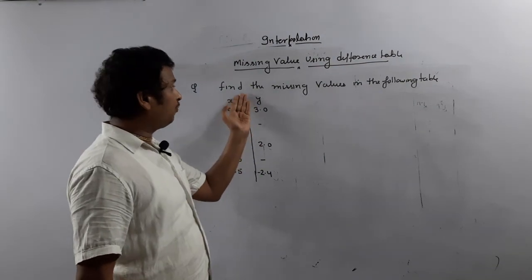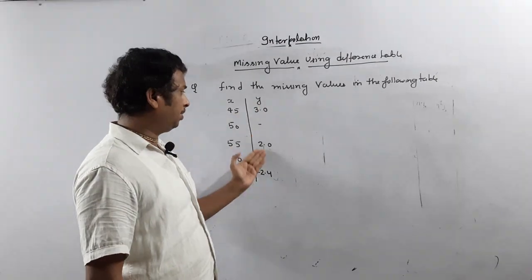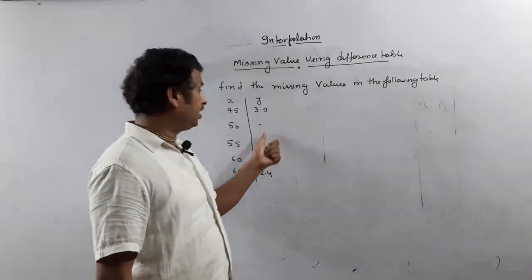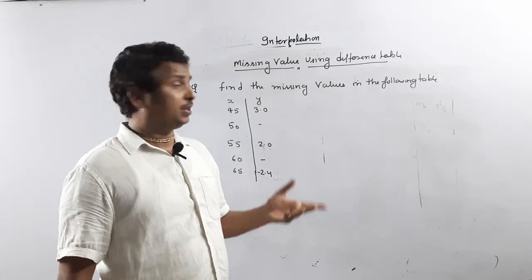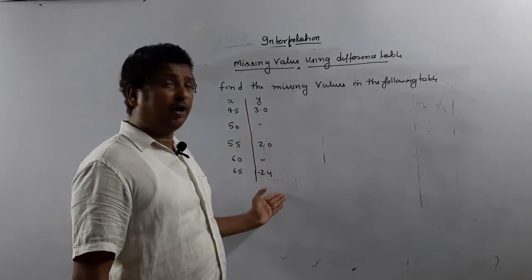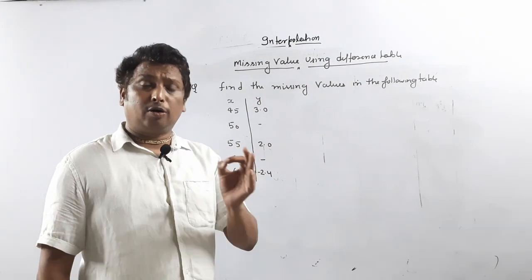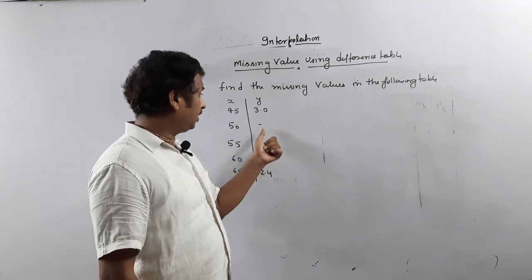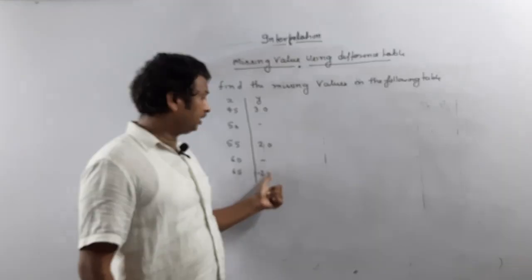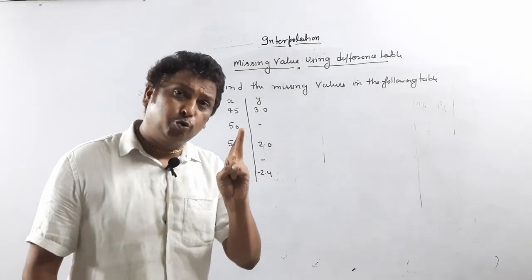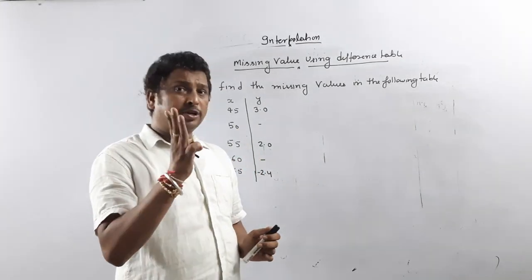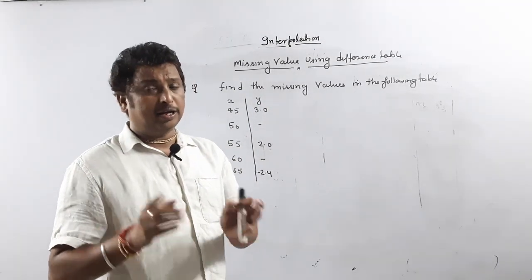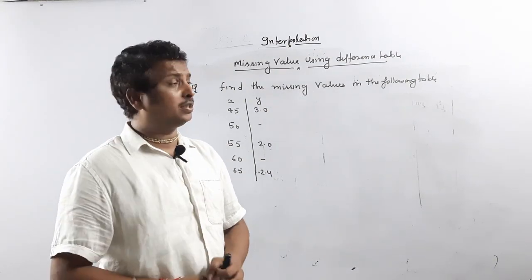Suppose I have taken one question to find the missing values in the following table. Here two values are missing. How we calculate these values — sometimes 4 values are given, sometimes 2. First, see how many values are given. Here 3 values are given and 2 values are missing. So 3 values given means we have to go up to the third order difference table.